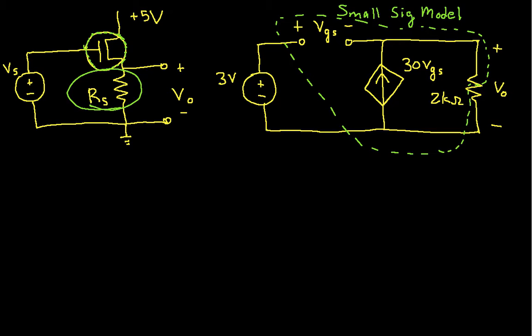You'll notice that I have a dependent current source, and that current source is controlled by this value. So the source looks at the voltage VGS, which is the voltage from this point to this point, multiplies it by 30, and that's the value of the current that the source provides.